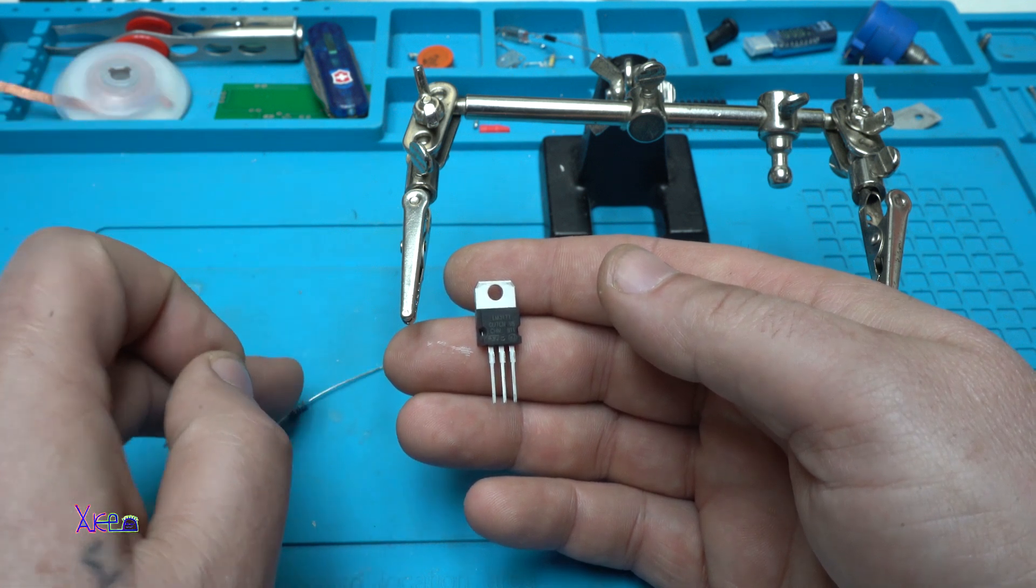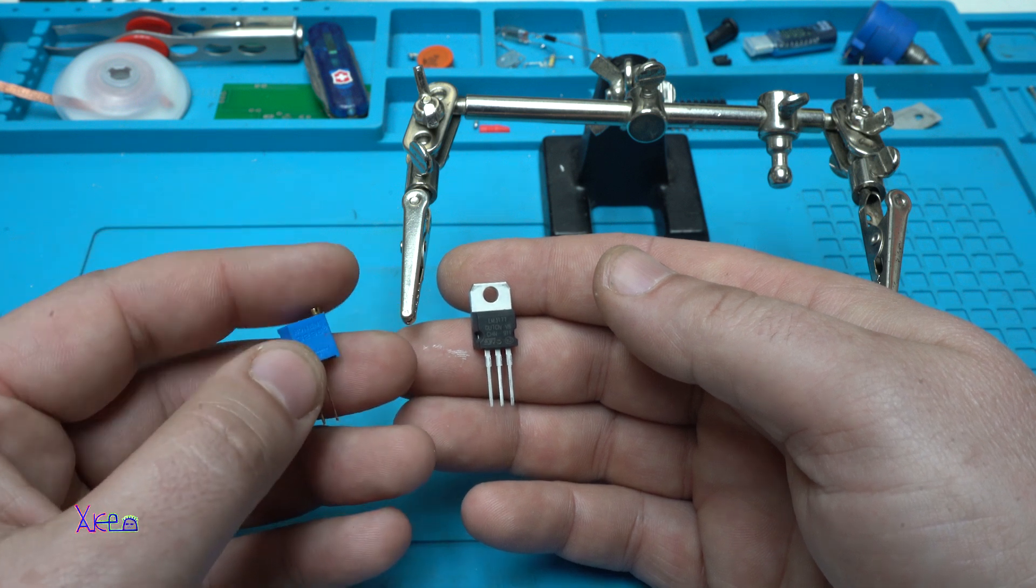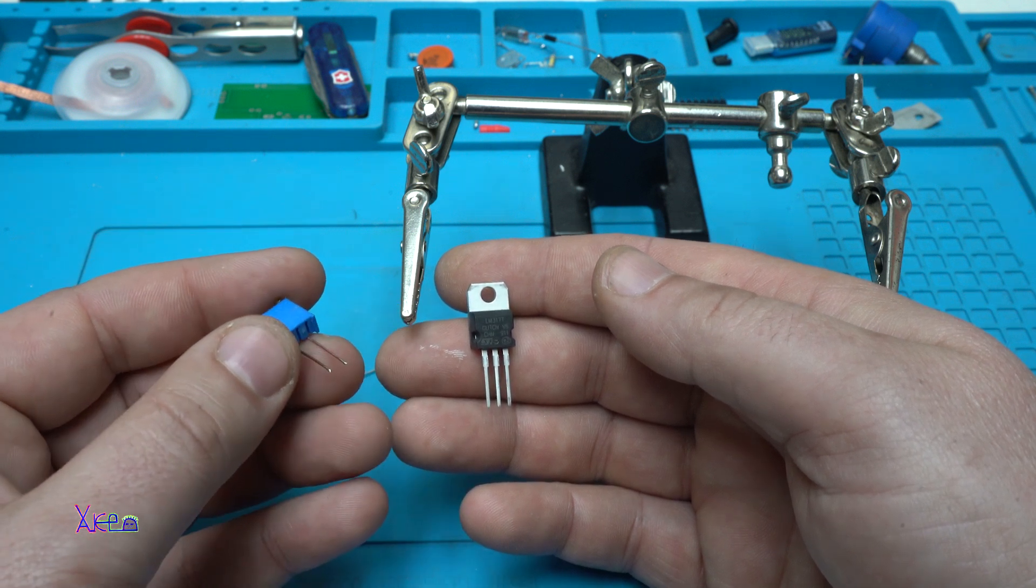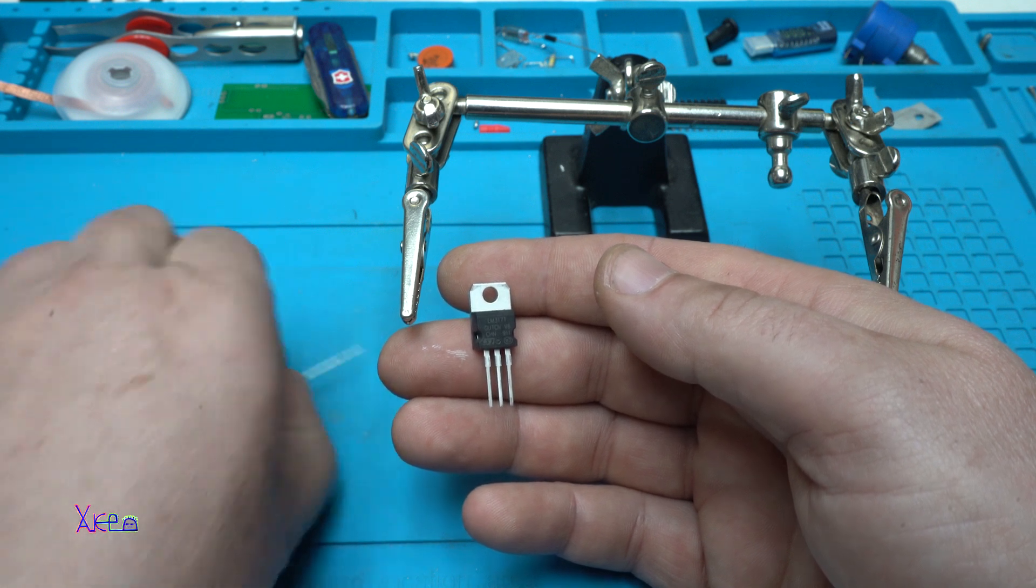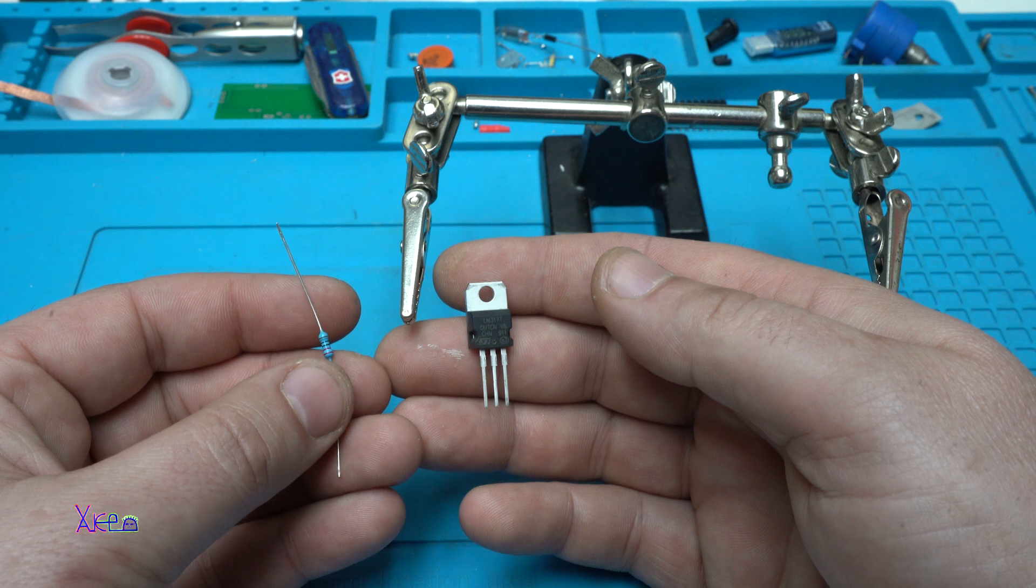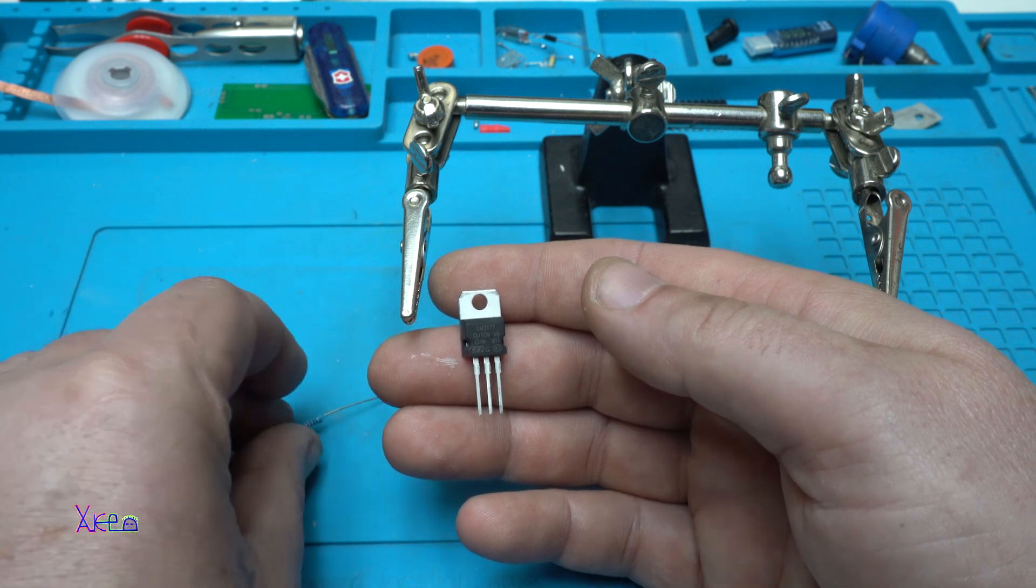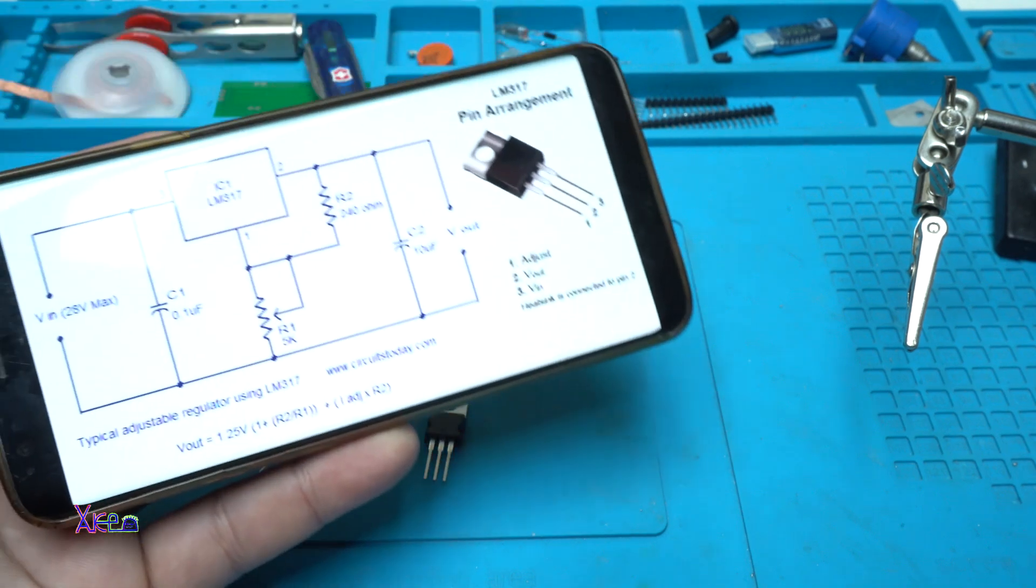I'm going to use this multi-turn potentiometer for adjusting the voltage. Using this resistor of 220 ohms, we're going to set the amps to maximum, which will be around 1 amp.